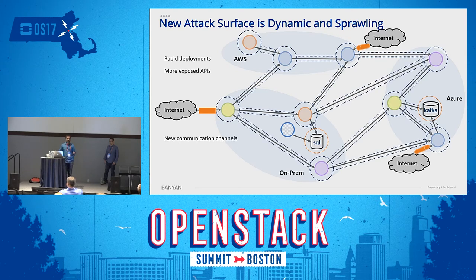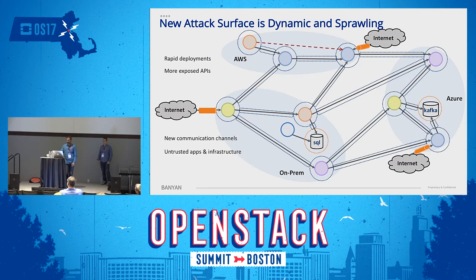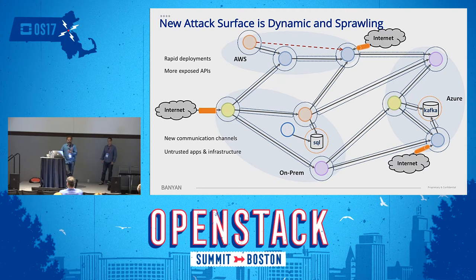The communication channels are another aspect. Microservices take function calls and convert them into network API calls, so you need to worry about data flowing on the network and potentially across clouds — opening up another attack surface. Finally, these apps and infrastructure are becoming less trustworthy. They're developed fast, often pulled from the internet as open source components run without proper review. If one goes rogue, it can attack other applications and spread quickly.